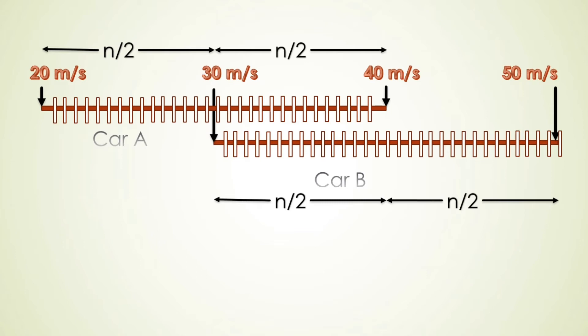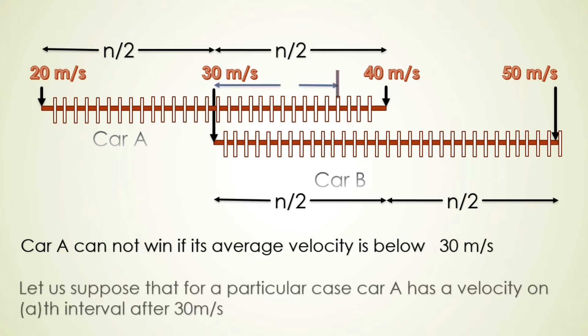Now we have to calculate the favorable number of outcomes for Car A. Car A cannot win if its average velocity is below 30 m/s, because if average velocity of Car A is below 30 m/s, then there is no possible velocity for Car B such that Car A can win.